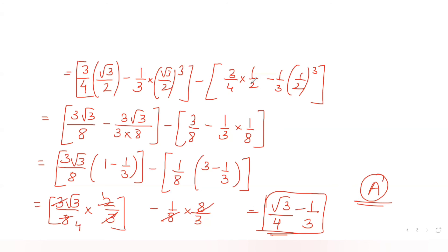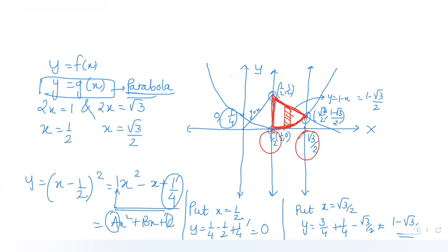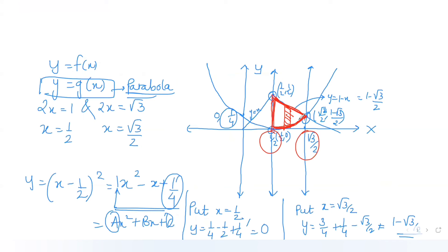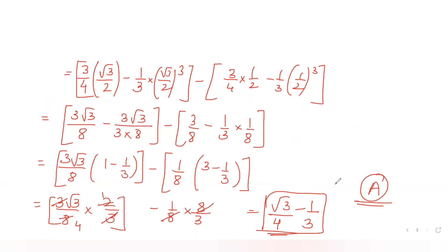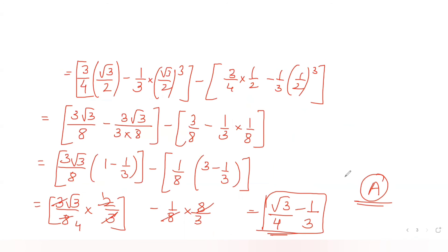The answer is √3/4 - 1/3, which matches option A. This was a straightforward question — just plot the curves to identify the region, then integrate the straight line minus the parabola from x = 1/2 to x = √3/2. I hope you understood this well. I'll meet you tomorrow with the next question — like, share, and subscribe if you found this helpful!